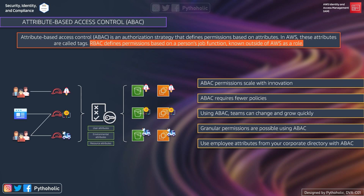Fourth, granular permissions are possible using ABAC. Unlike RBAC, you can implement least-privilege access principles by creating a policy with permissions to perform just the required task, and permission scaling is rapid in attribute-based access control.